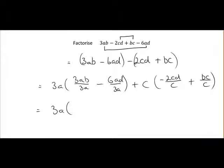So 3ab divided by 3a, so the 3 cancels, the a's cancel, and you're just left with b. 6 divided by 3 is 2, the a's cancel, and we're just left with d, so it's minus 2d.